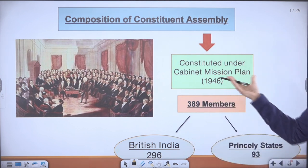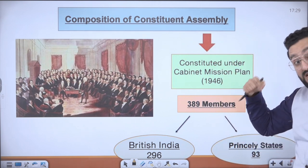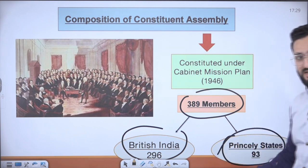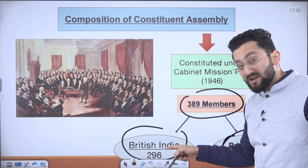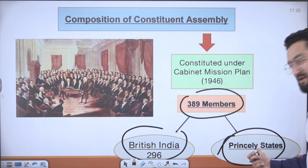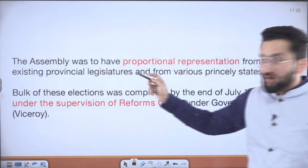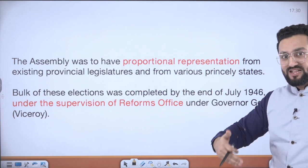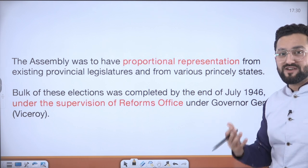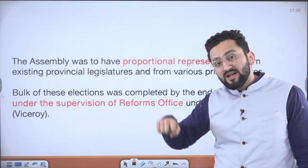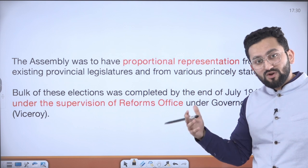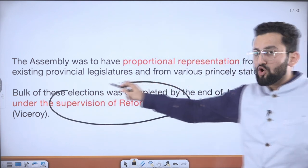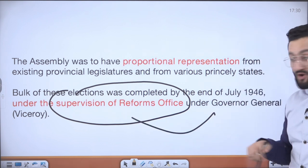Composition of the Constituent Assembly under the Cabinet Mission Plan: 389 members in total — 296 from British India and 93 from princely states. British India members would be elected, and princely state members would be nominated. The assembly was to have proportional representation — based on population — to ensure a fair and more representative composition. In May 1946, the Cabinet Mission Plan was circulated and accepted, and in July 1946, elections were done. This process was expedited under the supervision of the Reforms Office, which was working under the Viceroy's Office.